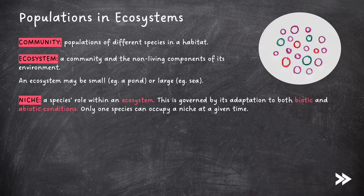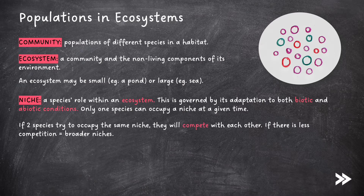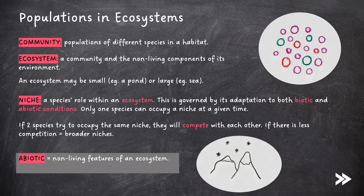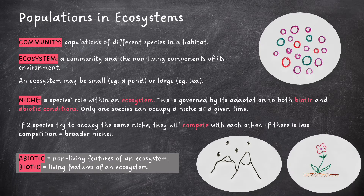Only one species can occupy a niche at a given time. If two species try to occupy the same niche, they will compete with each other. If there is less competition, we have broader niches. Note that abiotic features are the non-living features of an ecosystem, and biotic features are the living features of an ecosystem.